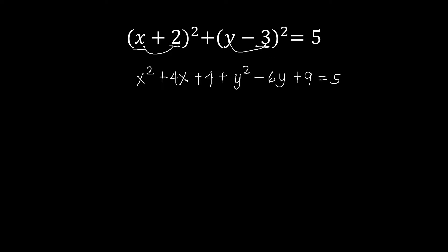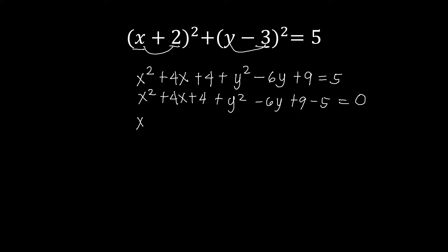That equals 5. We move the constant to the left side: x squared plus 4x plus 4, plus y squared minus 6y plus 9. We subtract 5 from both sides so nothing remains on the right side aside from 0. This is now minus 5, equal to 0. We arrange starting with x squared, then y squared, then plus 4x, then minus 6y. Combining constants: 4 plus 9 is 13, minus 5 equals positive 8. That's equal to 0. This is now our general form.